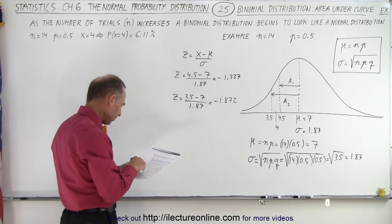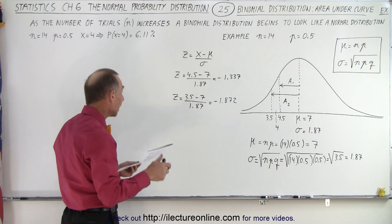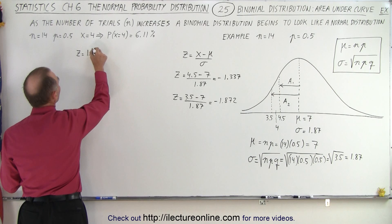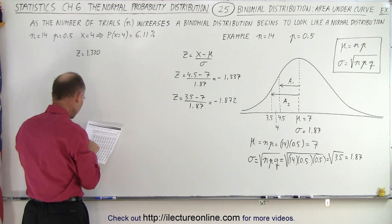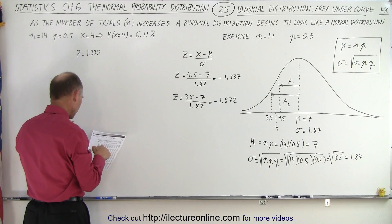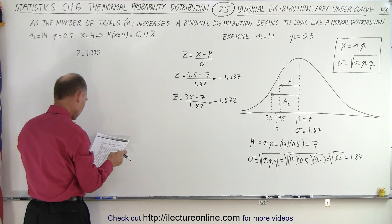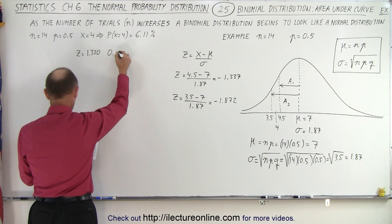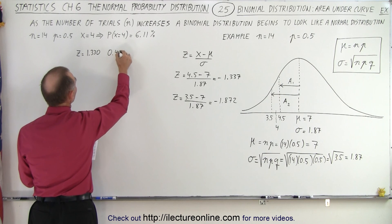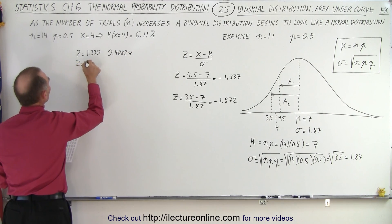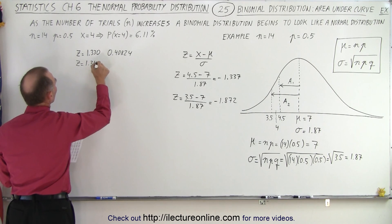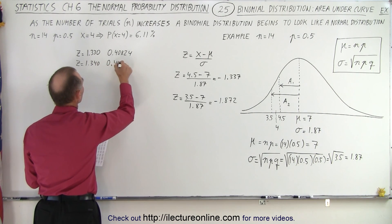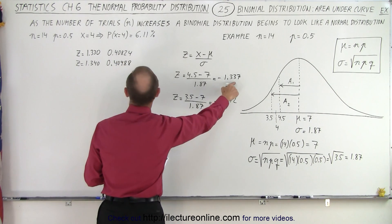1.337, so I can find 1.33 and 1.34. So for z equals 1.330, because that's all I have on my table, I get 0.40824, and for z equals 1.340 I get 0.40988.